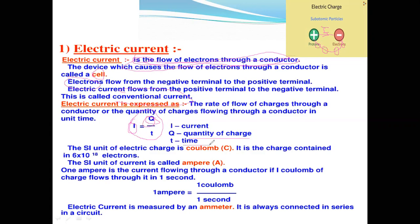Q means quantity of charge and T means time. The SI unit of electric charge is Coulomb. The SI unit of current is Ampere. One Ampere is the current flowing through a conductor if one Coulomb of charge flows through it in one second.